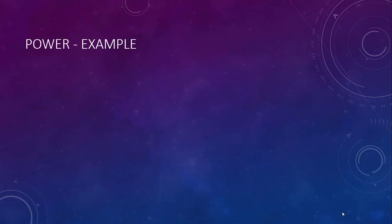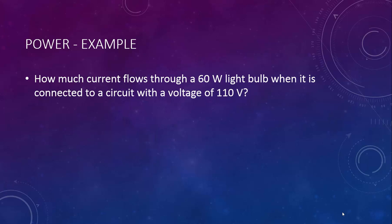Let's take a look at an example. How much current flows through a 60 watt lightbulb when it is connected to a circuit with a voltage of 110 volts? Since we know the power and the voltage and we're looking for current, we can use the form of the equation p equals vi. If we plug in our givens, we can find out that the current through the lightbulb is 0.55 amps.